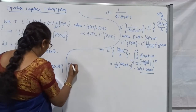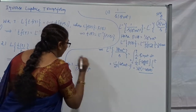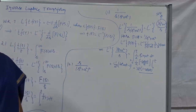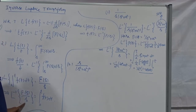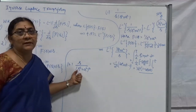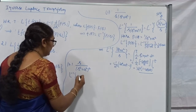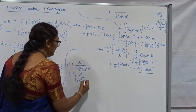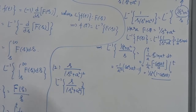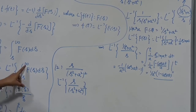Let us go to the second problem: find L-inverse of s divided by (s² + a²)². Now I am not going to use the formula L-inverse of F(s)/s that I discussed in the first problem, because we must bifurcate s in the denominator — but we don't have any s in the denominator alone; we have s in the numerator. So we can't go for that formula. Therefore, I am going to take L-inverse of s/(s² + a²) as my F(s) and use the formula f(t)/t = L-inverse of the integral from S to infinity of F(s) ds.